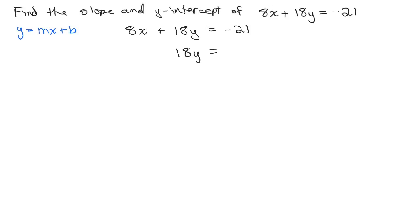I'm going to put that before the constant. Because in y equals mx plus b form, the x term is the first thing after the equal sign. So I have negative 8x minus 21.